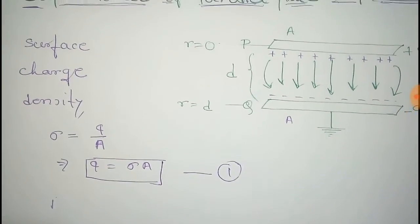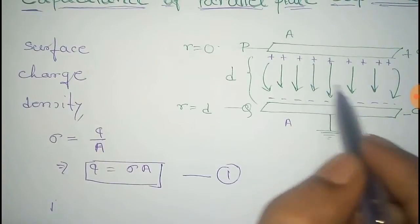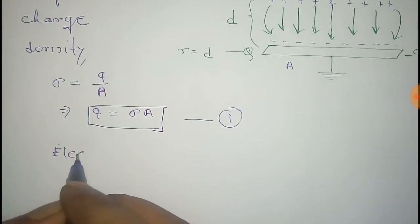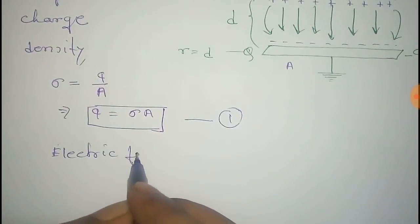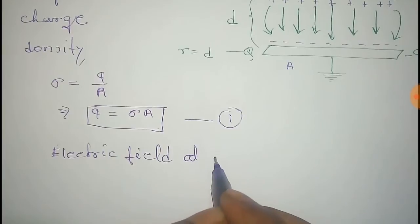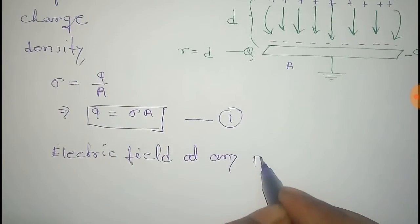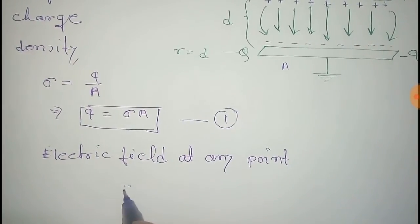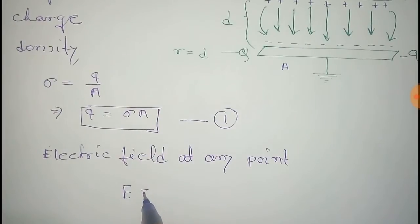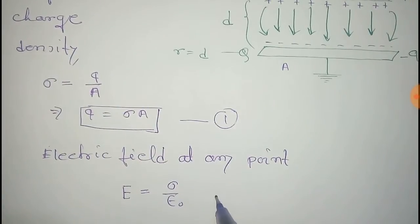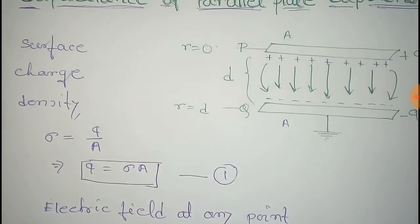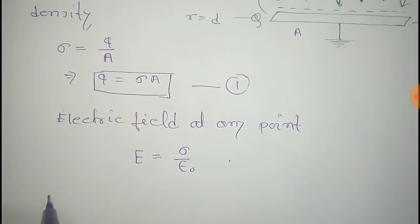Now we go to find the electric field in the region between the two plates. So that is electric field between the two plates. E equal to σ by ε₀, it is a formula. So the potential at the plate P